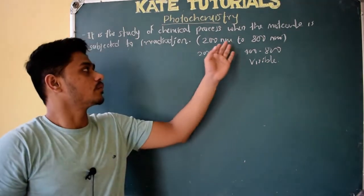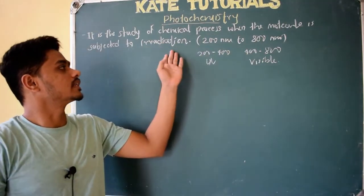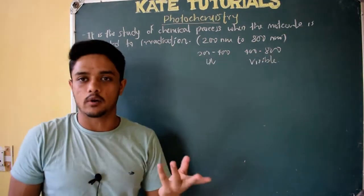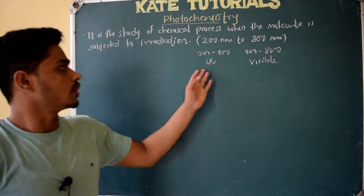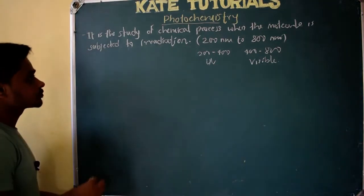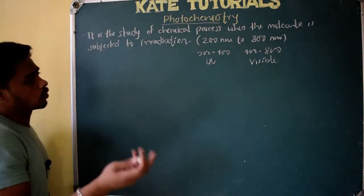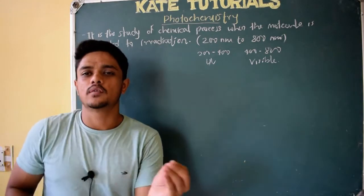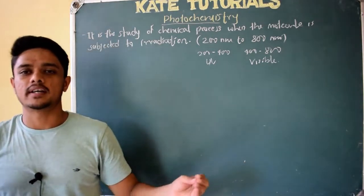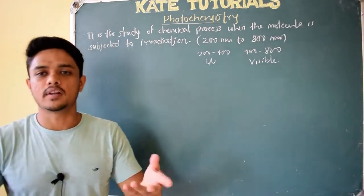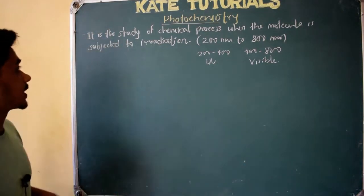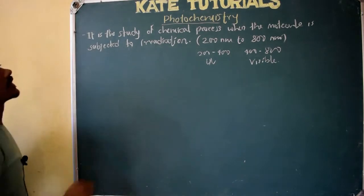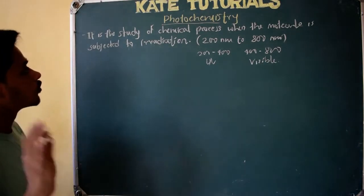Most of the phenomena which we have studied in UV-visible spectroscopy are applicable to photochemistry, as it involves irradiation from 200 to 800 nanometer. Most of the phenomena will be the same; only a few things will be different here and there, which we will discuss in this chapter. This is the definition of photochemistry.